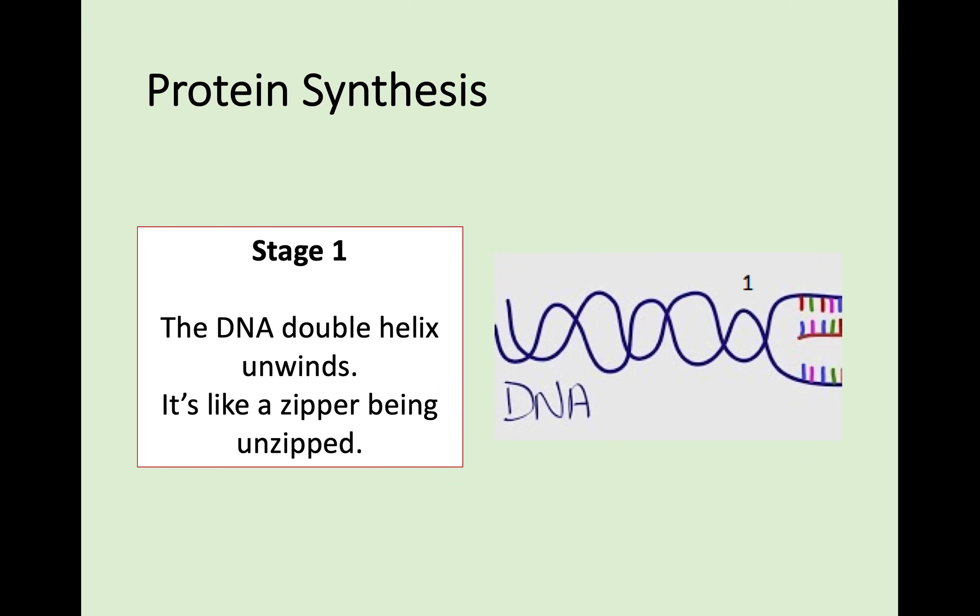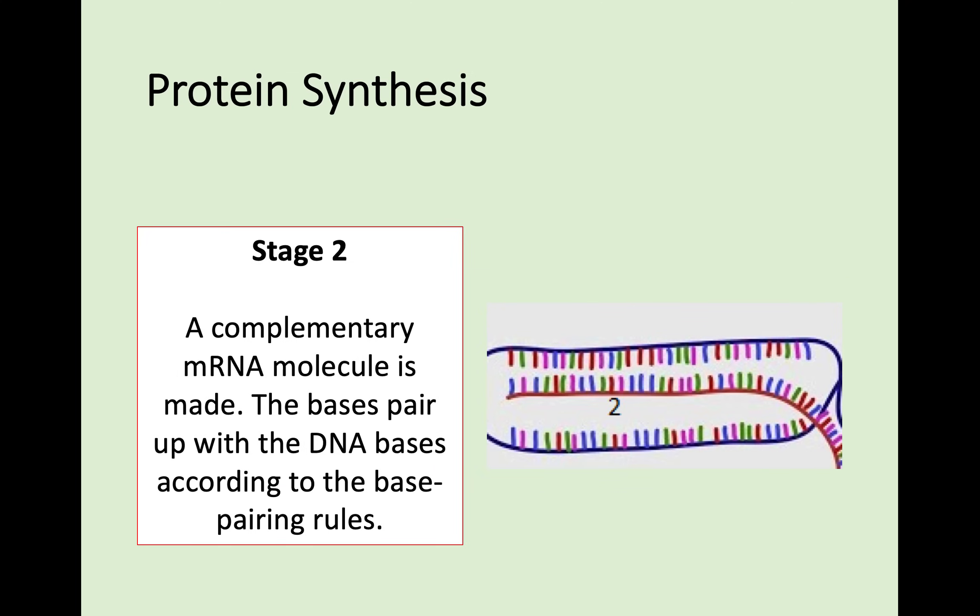In stage one, the DNA, the double-stranded helix of DNA, starts to unwind. It's like a zipper being unzipped into two separate strands. What then happens is the complementary mRNA molecule is made and lines up with these single strands now. For example, if one of the strands was A, T, G, and C, then T, A, C, G would be the complementary strand made by mRNA. So these bases pair up according to these base pair rules that we've looked at.